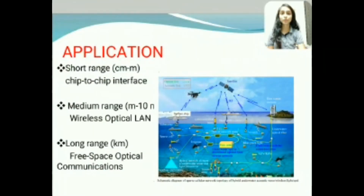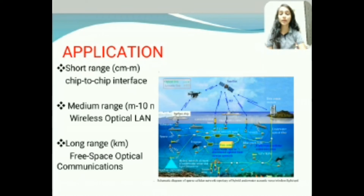Hi everyone, my name is Shruti Patankar, roll number 47. Today I am going to tell about applications of wireless and optical communication. The first application is short range, chip-to-chip interface, where different wireless technologies have been developed for very short distances — for example, Bluetooth. Short range signals can travel from centimeters to meters. The second is medium range wireless optical, where signals can travel from meters to hundreds of meters. The third is long range free space optical communication, where signals can travel from several kilometers to thousands of kilometers. These are the applications of wireless and optical communication.